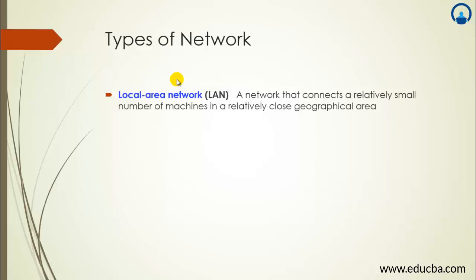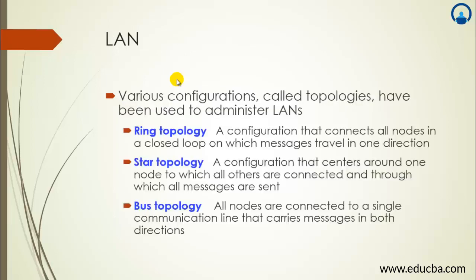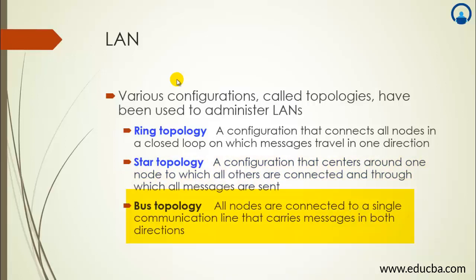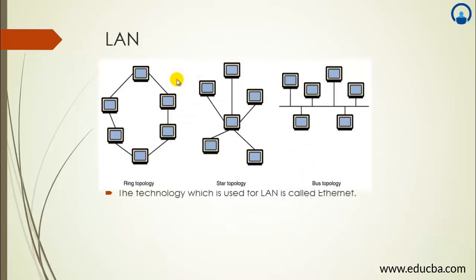There are different types of topology used in LAN: ring topology, star topology, and bus topology. Ring topology connects all nodes in a closed loop on which messages travel in one direction. Star topology is centered around one node to which all others are connected and through which all messages are sent. Bus topology connects all nodes to a single communication line that carries messages in both directions. These diagrams give a gist of the different topologies.